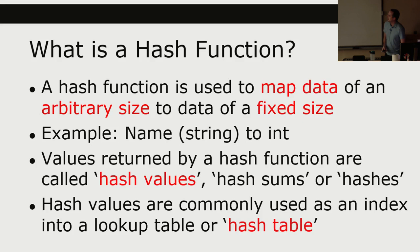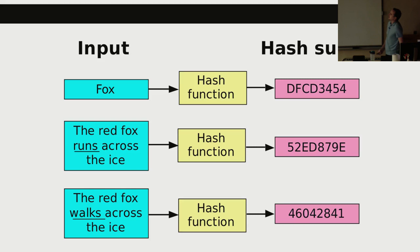Hash values are commonly used as an index into a lookup table or a hash table. One of the ways you can implement an efficient data structure is an array, and to look up something in an array you need an index. So you can take some data, turn it into an integer, and use that integer as the index into your array. For example, we could take 'Fox', run it through a hash function, get some value; run a longer string through, get another value.